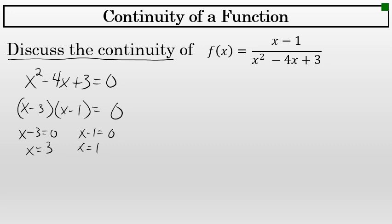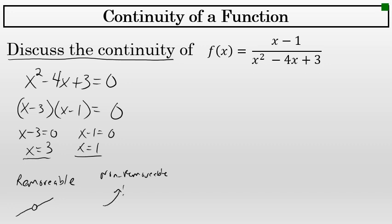To be a little more specific, we'll identify whether these discontinuities are removable or non-removable. A removable discontinuity is discontinuous by a single point, whereas a non-removable discontinuity involves more than a single point. In the case of rational functions, non-removable discontinuities take the form of vertical asymptotes.